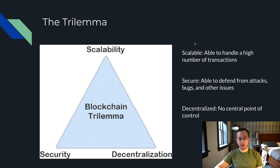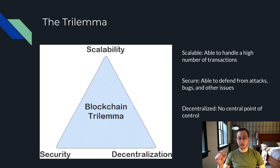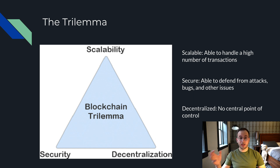The first piece of the trilemma that you can optimize for is scalability — the ability to handle a high number of transactions. The second piece is security — the ability to defend from attacks, bugs, and other issues. And lastly, you can optimize for decentralization, which basically means there's no central point of control over the blockchain.